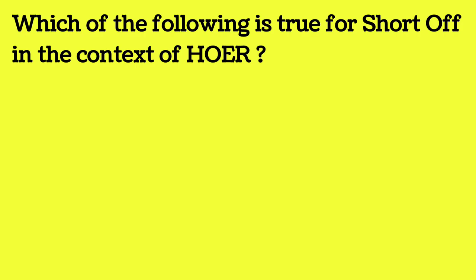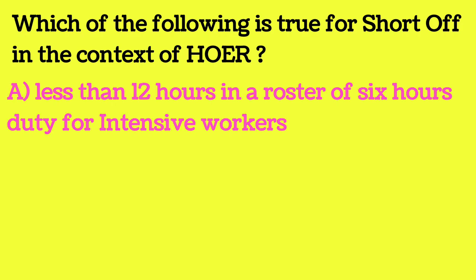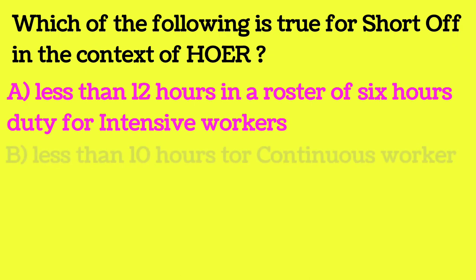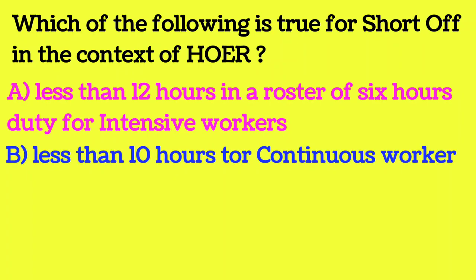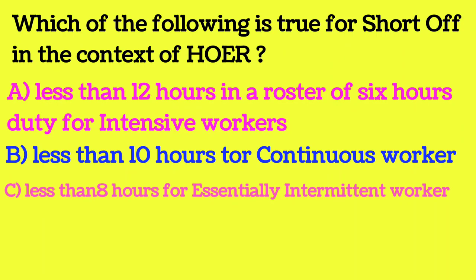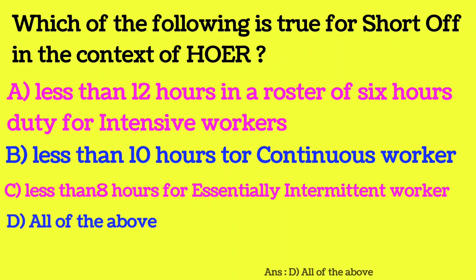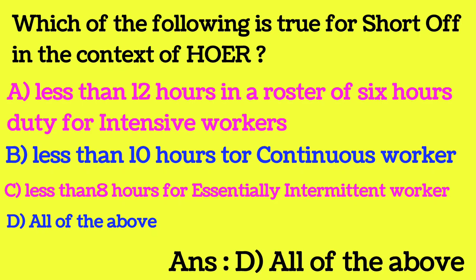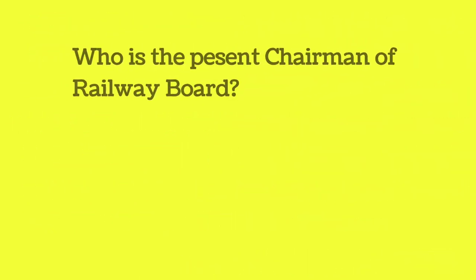Which of the following is true for 'short of' in the context of HOER? This question was repeated: Option A — less than 12 hours for intensive workers; Option B — less than 10 hours for continuous workers; Option C — less than 8 hours for essentially intermittent workers; Option D — all of the above. The answer is again all of the above.